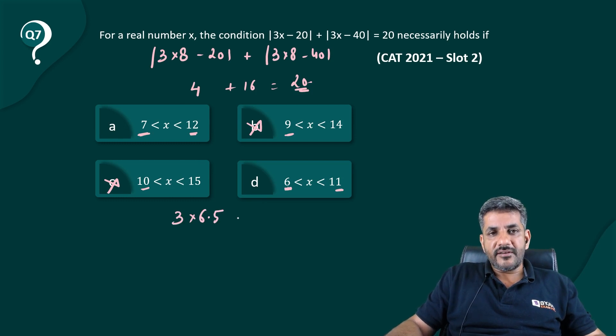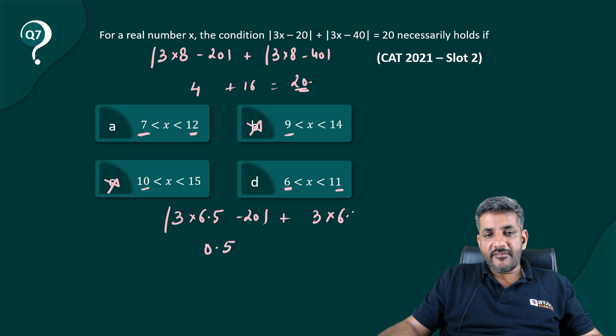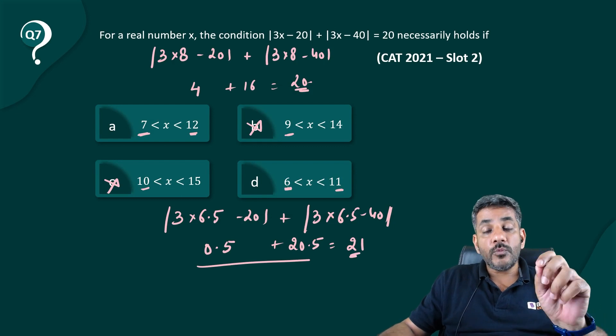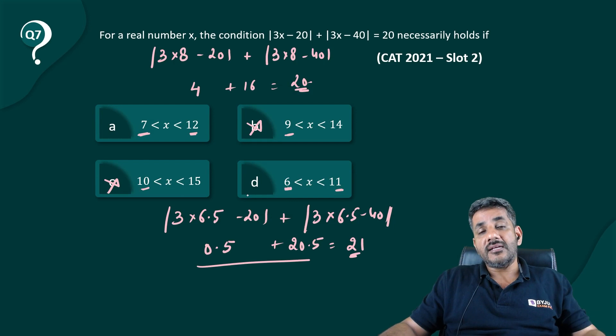If I take 6.5, it is 3 × 6.5 - 20, which is 19.5 - 20 equal to -0.5, or the modulus is +0.5. Then 3 × 6.5 - 40, so 19.5 - 40 is -20.5. The modulus of that is +20.5. That makes it 21. We need 20 at the end.